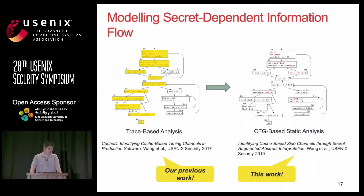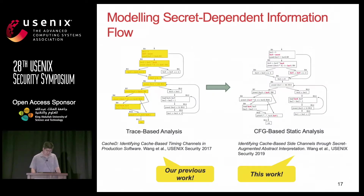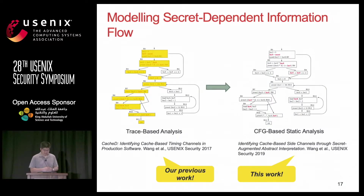How do we exactly construct the memory access formula for all memory operations in the binary? Our previous work, presented two years ago at the same venue, used a trace-based analysis: we execute the program, get a binary trace, and perform symbolic execution over this trace, giving a very precise construction of the formula. However, this limits coverage to the executed trace. In this work, we are transitioning from the dynamic approach to a static approach so that we can use static analysis to cover the entire program and all possible program execution states.